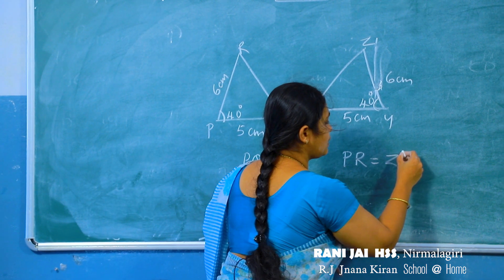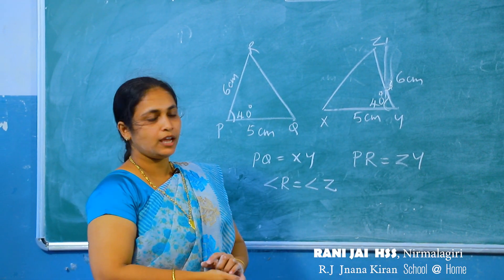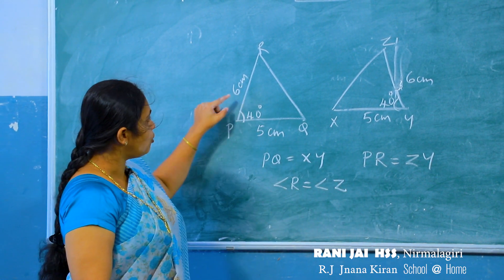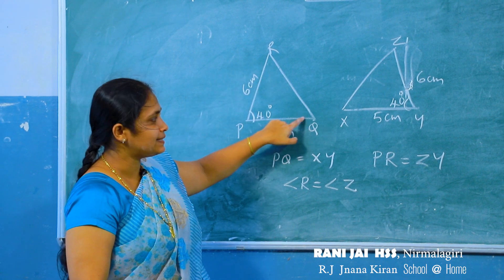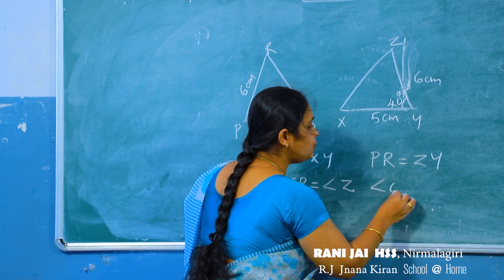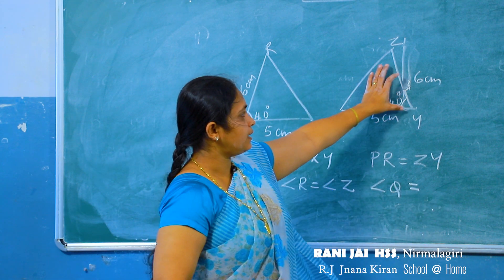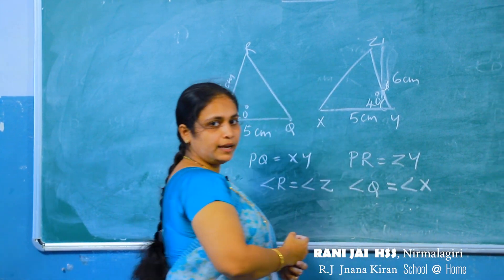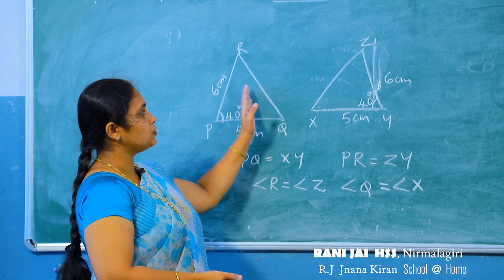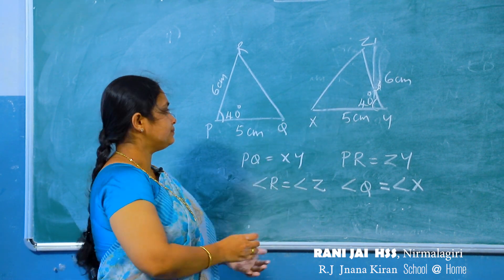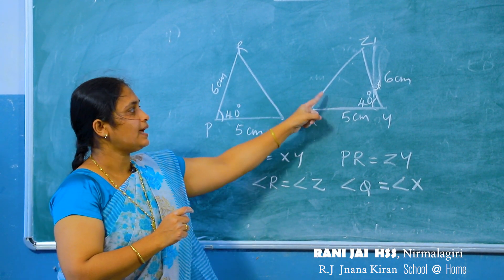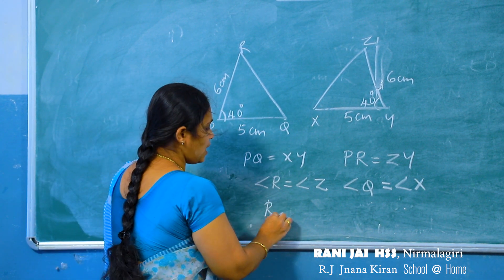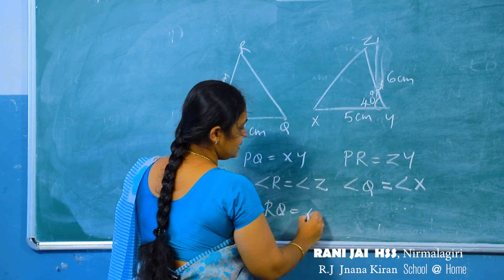Now consider the second case: PR equal to ZY, both are 6 centimeter. The opposite angle of PR is angle Q, and the opposite angle of ZY is angle X, so angle Q equals angle X. The third side is also equal: RQ equals XZ.